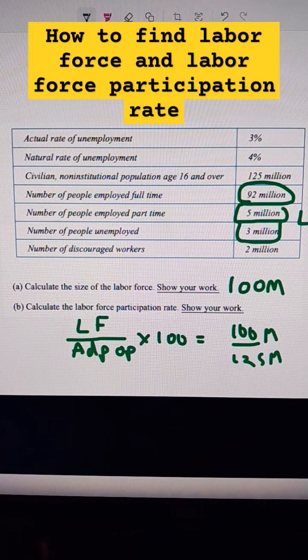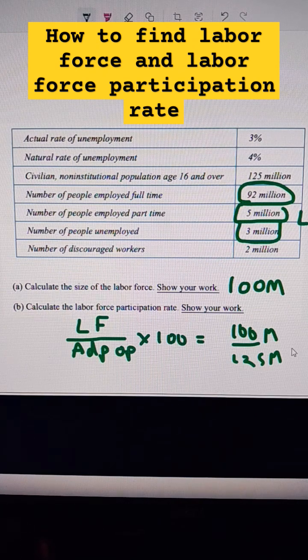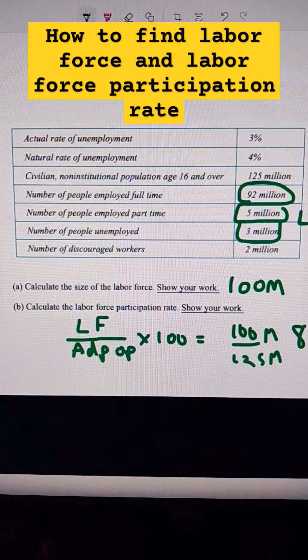100 over 125 is 0.8, which is 80%. That's our labor force participation rate.